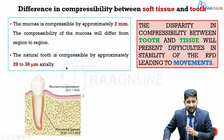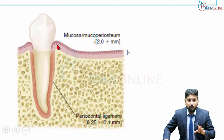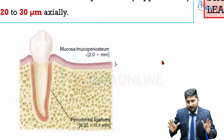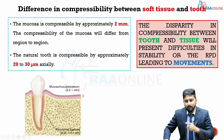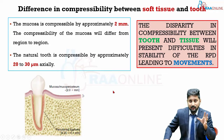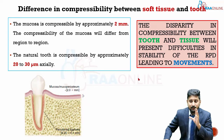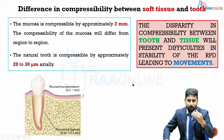Since the removable partial denture takes support from both soft tissue and the tooth, and these are compressed to very different degrees, there is a disparity in compressibility between the support regions. This disparity creates difficulty in the stability of the RPD, resulting in certain movements. The RPD will be retentive, but will also have stability challenges caused by this disparity between soft tissue and tooth compressibility.